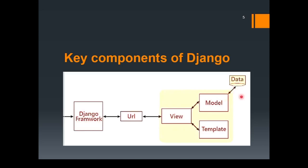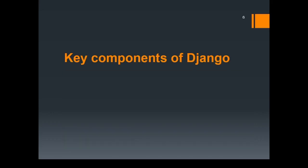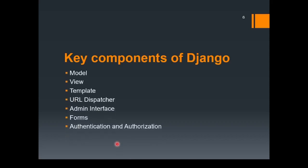If some data is required by the Django framework, the model can easily interact with the view and show the desired template with that data to the user. Apart from Model, View, Template, and the URL dispatcher, we also have other important components in Django, including the admin interface, forms, and authentication and authorization. Django provides an automatic admin interface based on the application's model, which allows administrators to manage and update data without creating custom views or interfaces. You really don't have to create an admin interface yourself because Django already provides that.